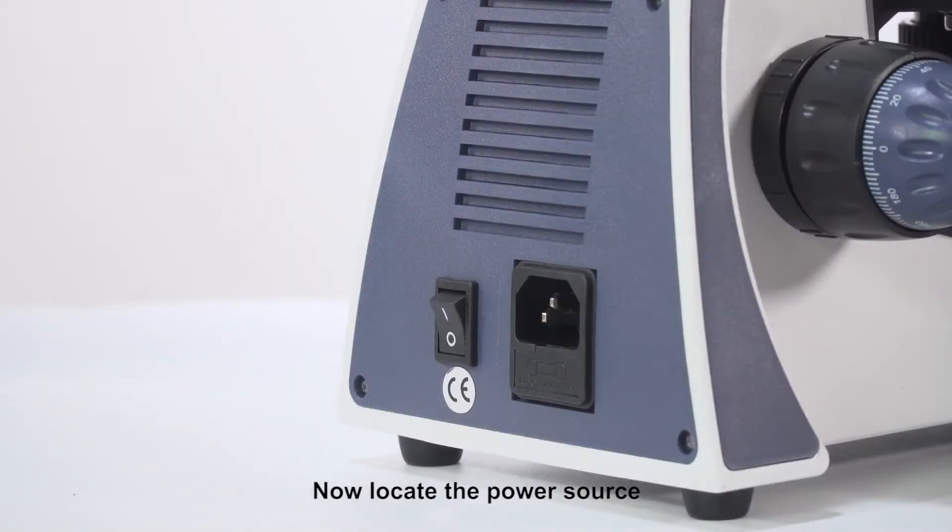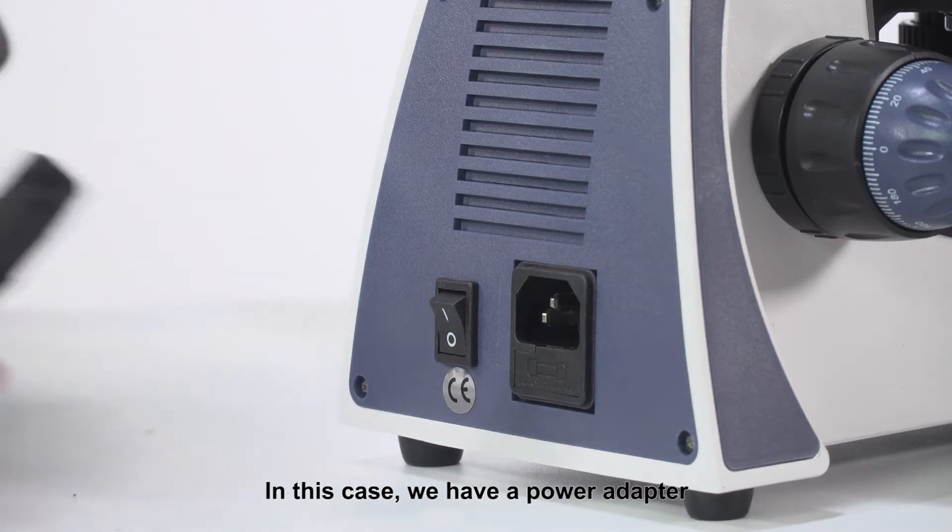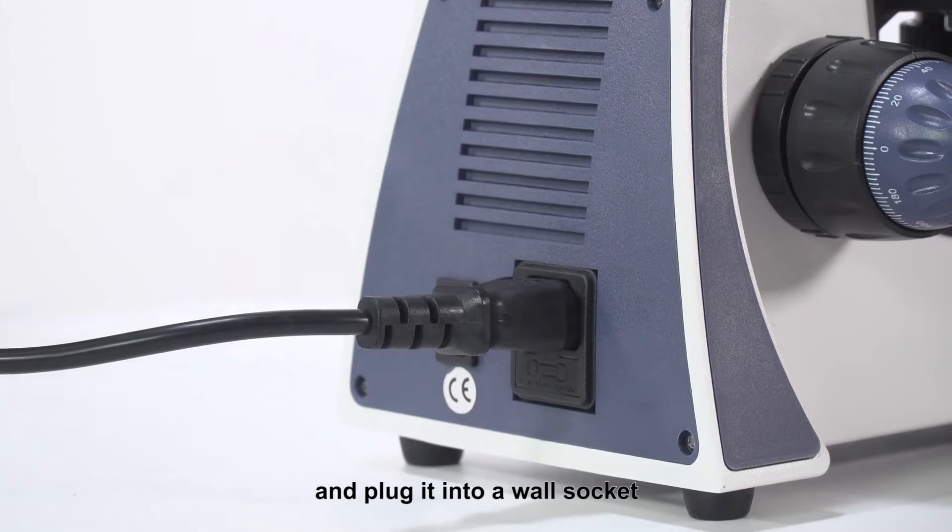Now locate the power source. For some microscopes this may be a battery compartment. In this case we have a power adapter. Connect the power adapter to the microscope base and plug it into a wall socket.